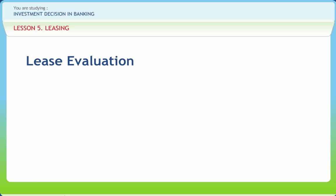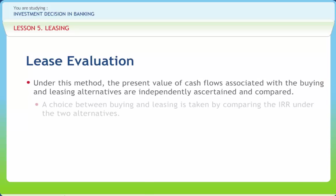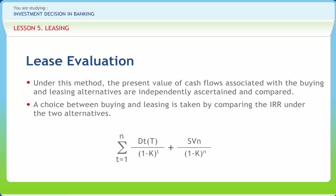A leasing transaction has to be beneficial to both the lessee and lessor; each party evaluates the transaction from their own point of view and arrives at a cost-benefit analysis. There are many models to evaluate a lease from the lessee's angle. Some treat leasing as a finance decision and compare the advantages of buying and leasing according to discounted cash flow techniques using either Net Present Value (NPV) or Internal Rate of Return (IRR) method. Under the NPV method, the present value of cash flows associated with the buying and leasing alternatives are independently ascertained and compared.